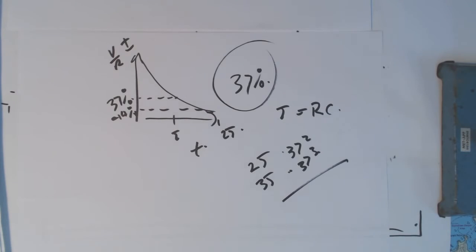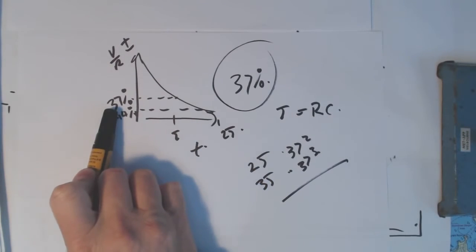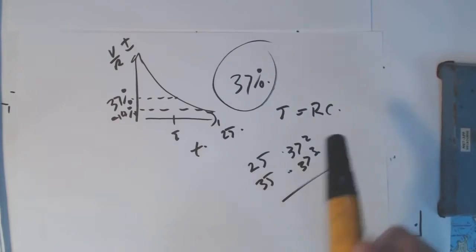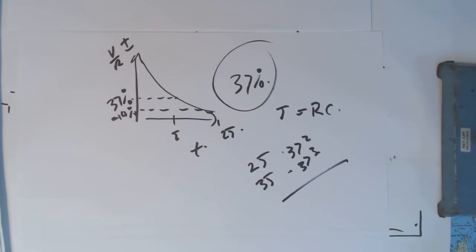This is a real simple way of looking at it. Just going, these graphs, 37%. You want to know after one time constant, it's down to 37%. After two time constants, it's down to 14%. After three time constants, it'll be down to 0.37 cubed.